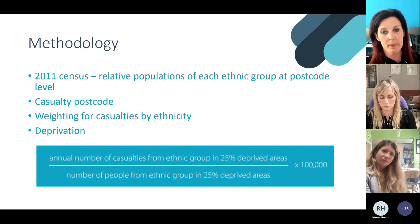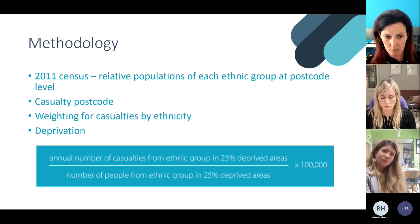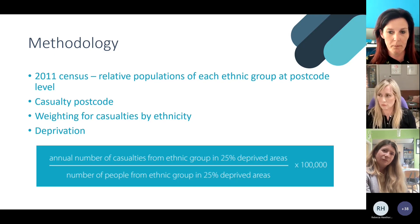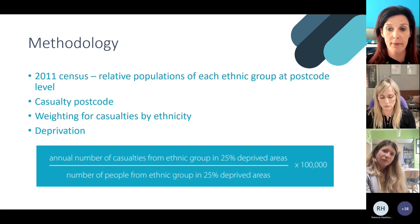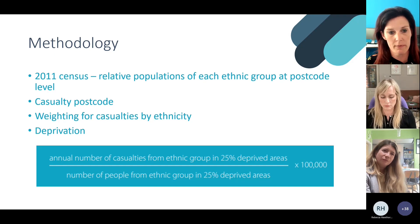The casualty rate per 100,000 represents the ratio between the observed number of casualties of an individual ethnicity and the expected number based solely on population share. Basically, if 30% of the population were from ethnic minority groups, we might expect 30% of casualties from ethnic minority groups if risk were equal. For this work we focused on pedestrian casualties who live in the 25% most deprived and the 25% least deprived neighbourhoods.